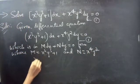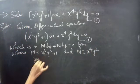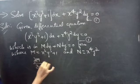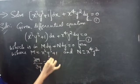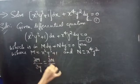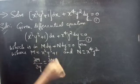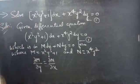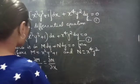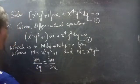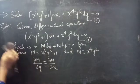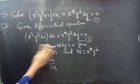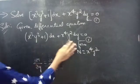If the partial derivative of M with respect to y is equal to the partial derivative of N with respect to x, then we can say that the given differential equation is an exact equation. So let's find ∂M/∂y and ∂N/∂x.